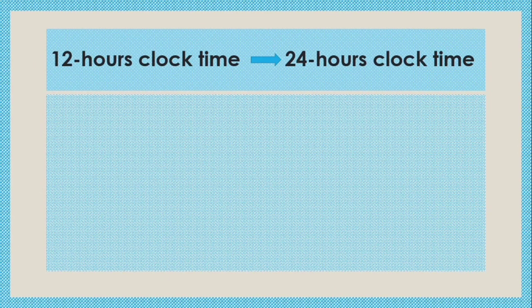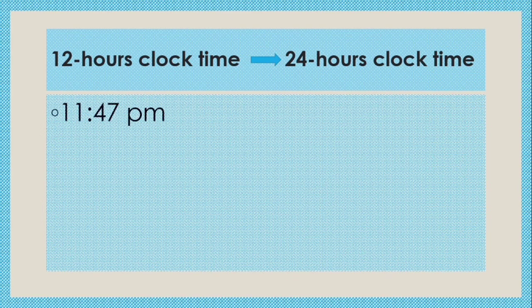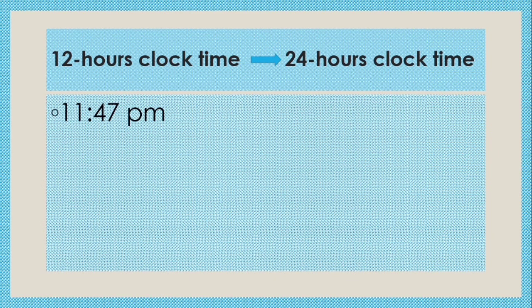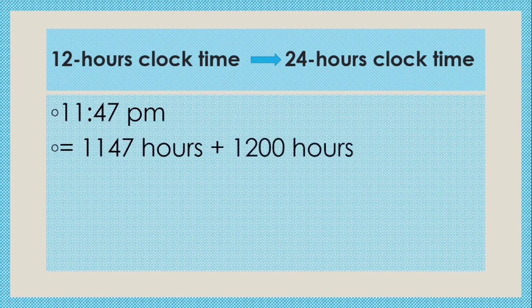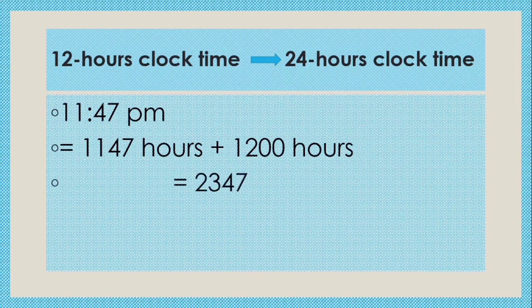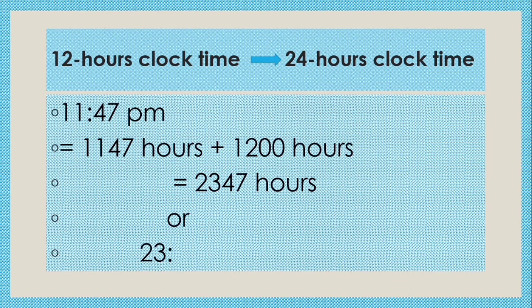Let's understand this with an example. Convert 12 hour clock time into 24 hour clock time: 11:47 PM. Since the time is PM, that means time is after 12 noon. So we will write 11:47 hours plus we will add 1200 hours to it because the time is after 12 noon. So the time will be 2347 hours, or we can also write 23:47 by separating it with a colon.